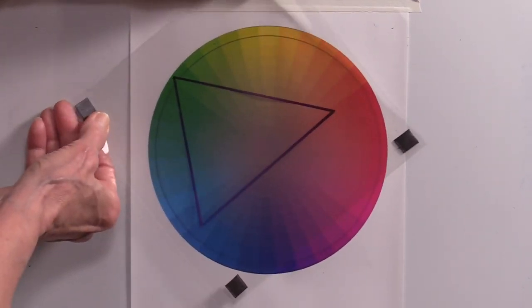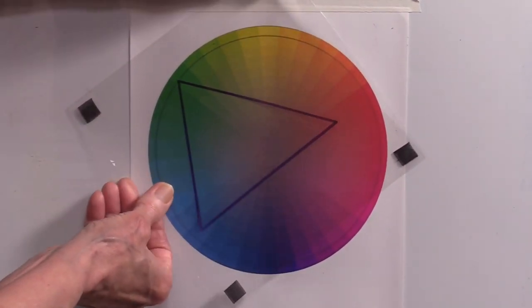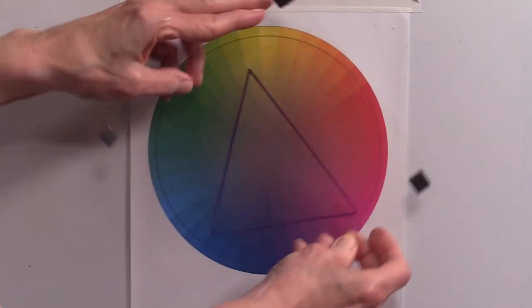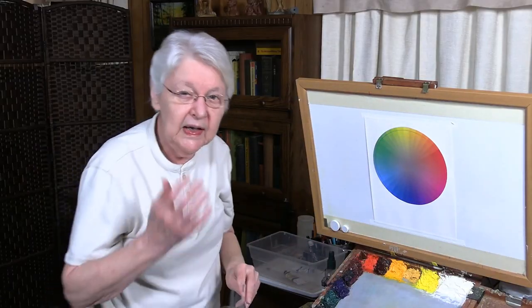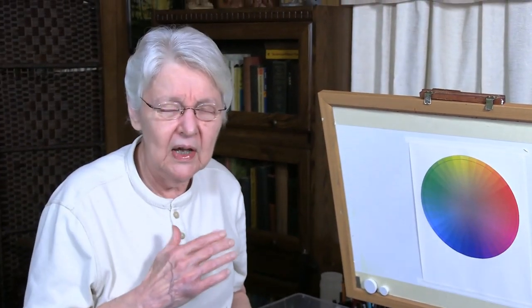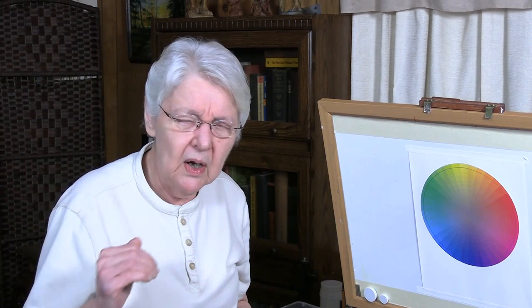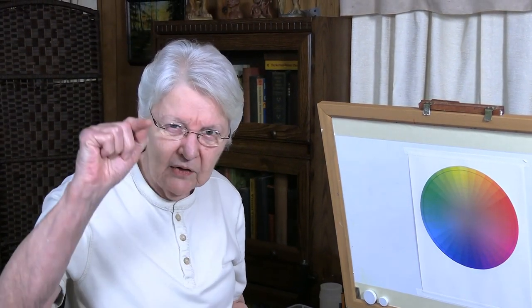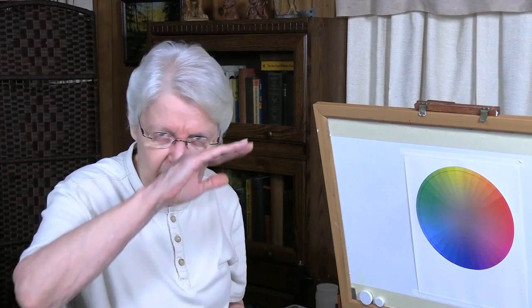So you could move it towards one that's totally saturated and the others not. You can move it around in whatever way you would choose to get your gamut of colors. So the gamut, any selection of colors that you would choose that would fall into a scheme.